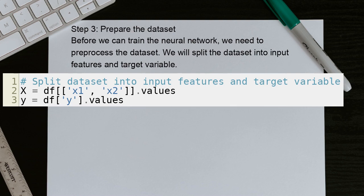Step 3: Prepare the dataset. Before we can train the neural network, we need to pre-process the dataset. We will split the dataset into input features and target variable.